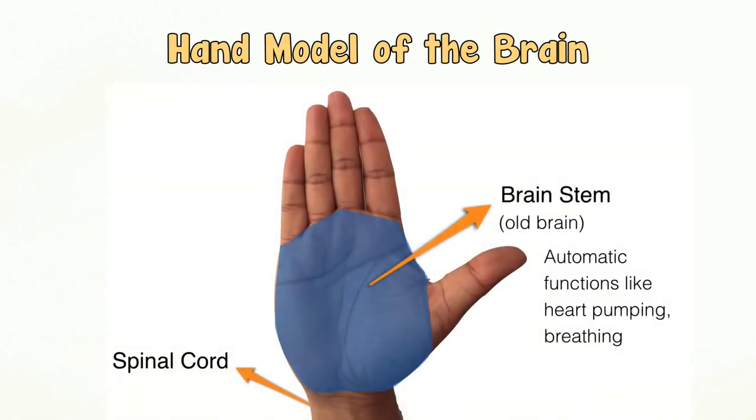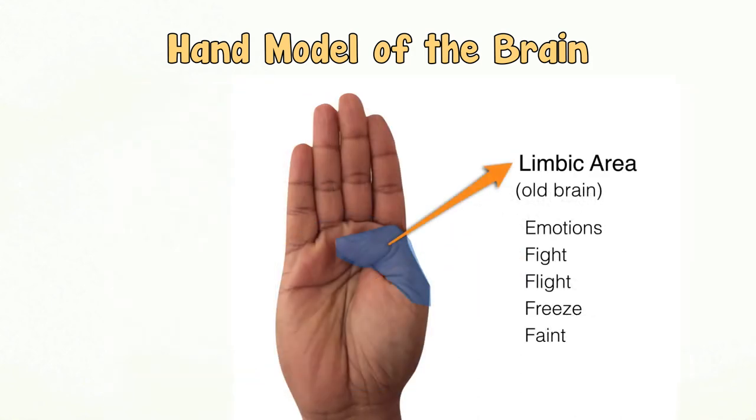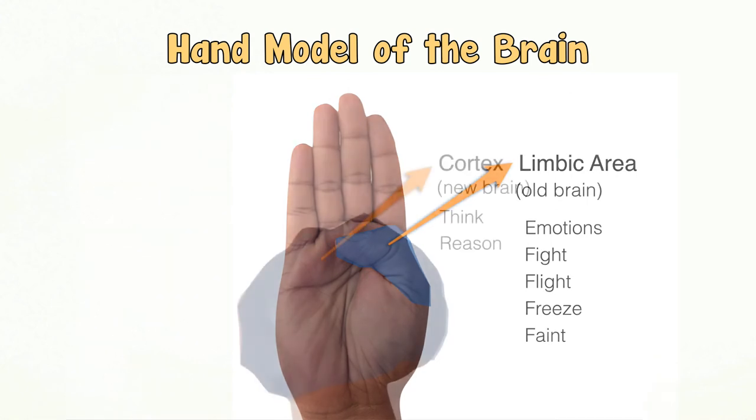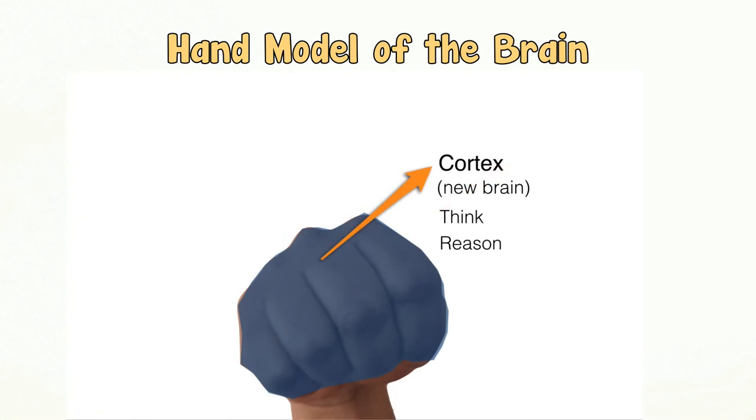Think of the palm of your hand as the brain stem, the old brain responsible for automatic functions like breathing. The folded thumb then becomes the limbic area of your brain that is responsible for your emotions and your response of fight, flight, freeze or faint.